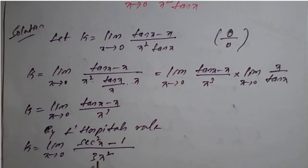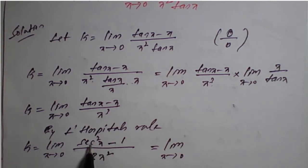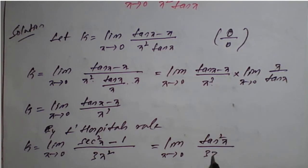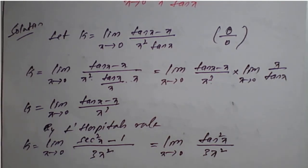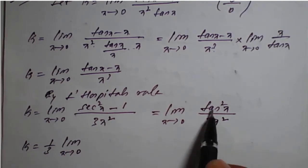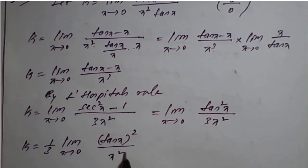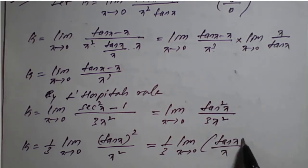We simplify this result further. We use the identity sec squared x minus 1 equals tan squared x, so k equals limit x tends to 0 of tan squared x divided by 3x squared. Checking again gives 0 by 0 form, so we rearrange: k equals 1 upon 3 times limit x tends to 0 of tan squared x upon x squared, which equals 1 upon 3 times limit x tends to 0 of tan x upon x, whole squared.